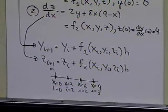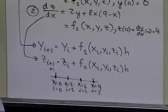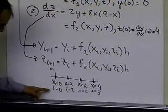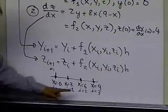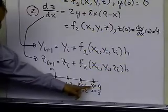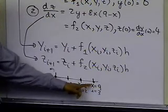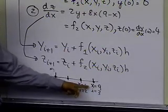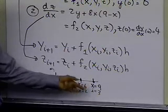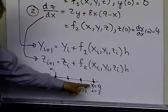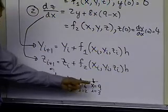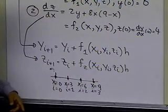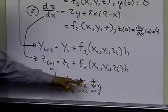Let's take a few steps and see how this all works out, and see what kind of value of y we get. Our aim is to find out the value of y at x equal to 9, and to see how far it is from the original boundary condition, which is given at x equal to 9, which is y(9) equal to 0.